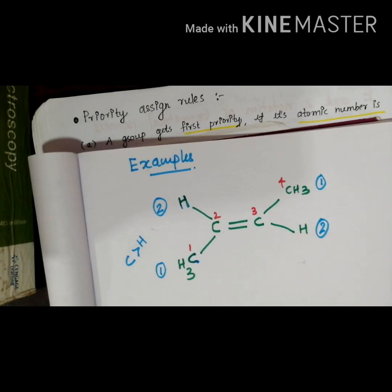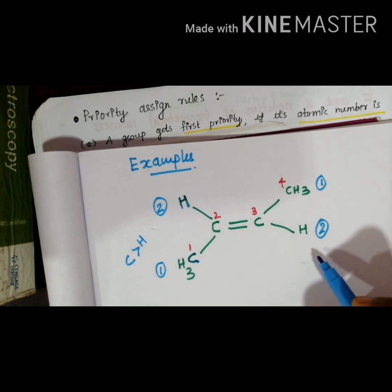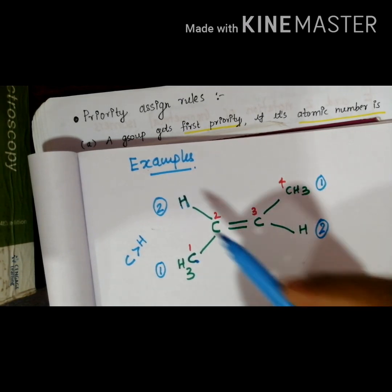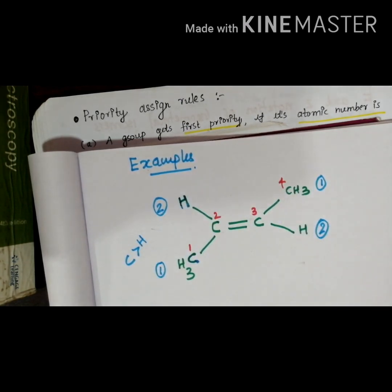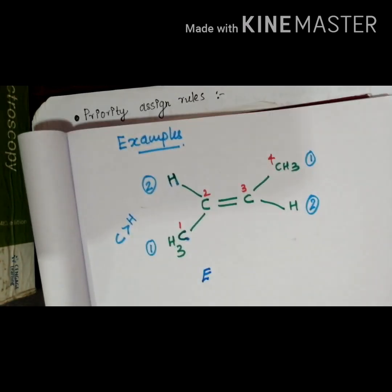Then you can look at the priority number only. Here two, one, one, two, two, one, one, two means two and two are on opposite side. Opposite means what? Same side means Z, Zusammen same, and it is just opposite. Opposite side means E. That means here the notation is assigned as E and is written in italic mode, italic, that means E.